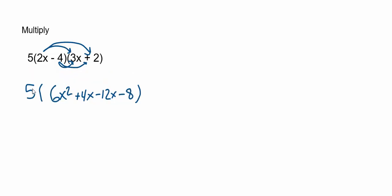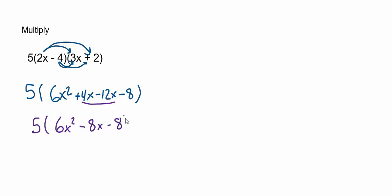I'm going to wait one more step before multiplying that five through all of the terms. I notice that I have two like terms in the center here, and I'm just going to combine them. 4x subtract 12x gives me negative 8x, which I'll write as minus 8x, and I'll copy the subtract 8. That is called combining like terms. They both have an x to the first, so they can be combined.